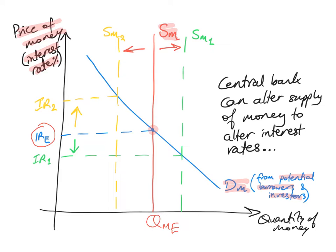The central bank can alter the supply of money to alter interest rates. If the central bank increases the supply of money and the curve shifts from SM to SM1, the interest rate will fall from IRE to IR1. If the central bank decreases the supply of money and the curve shifts from SM to SM2, the interest rate will rise from IRE to IR2. By increasing or decreasing the supply of money, the central bank can influence the equilibrium interest rate.